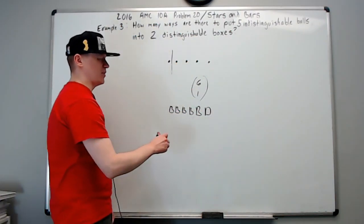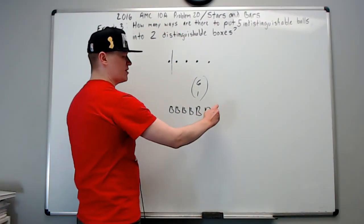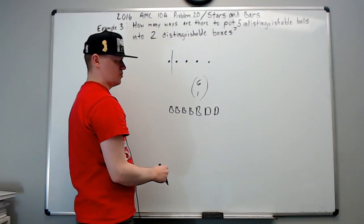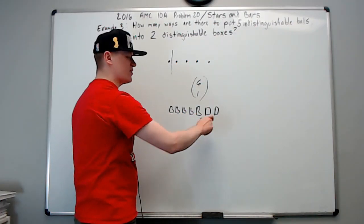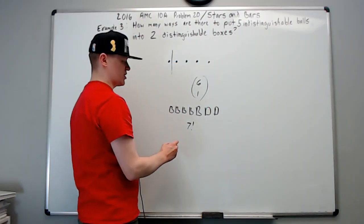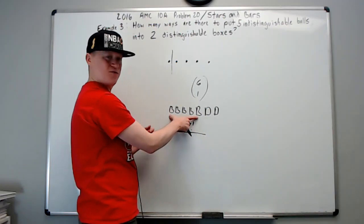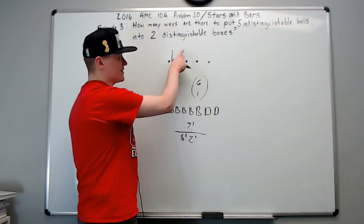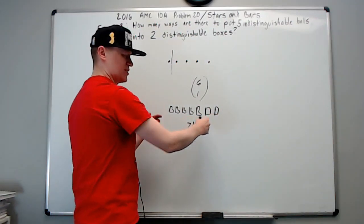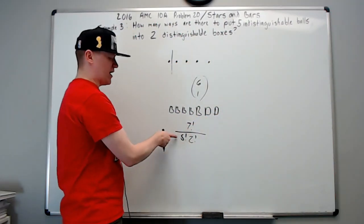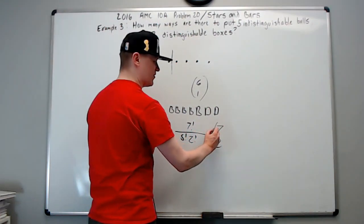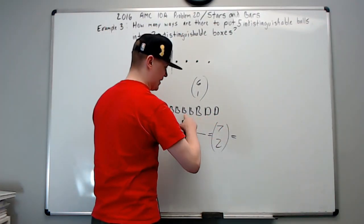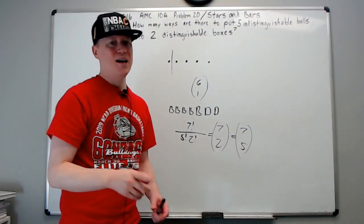To clarify how the letter method works with two dividers (three boxes): with seven total letters — five B's and two D's — you'd write 7 factorial divided by 5 factorial times 2 factorial, which equals 7 choose 2, or equivalently 7 choose 5. You choose positions for the D's or the B's — it comes out the same either way.